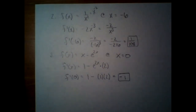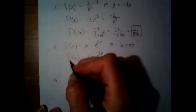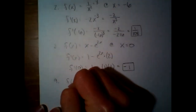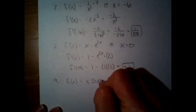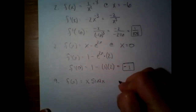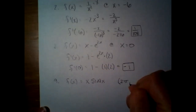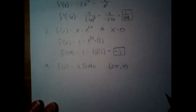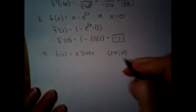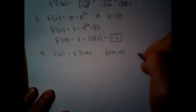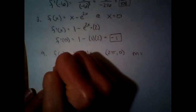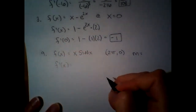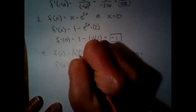The next one I wanted to look at was number nine. This one does ask for an equation, so we're going to need to write the whole thing. The point was (2π, 0). We have the point; we just need the slope, and we're going to need the derivative to get the slope. This is going to be a product rule.